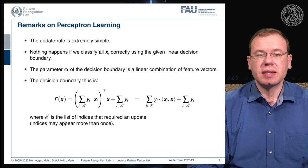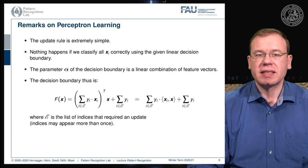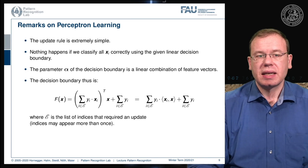Now that we know this, we can also reformulate by pulling x into the bracket. The decision boundary is then expressed as a sum over yᵢ times the inner product of the training observations xᵢ with the new sample x, plus the sum over all yᵢ. This is a very interesting observation.